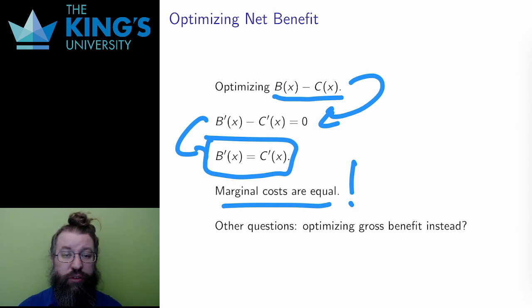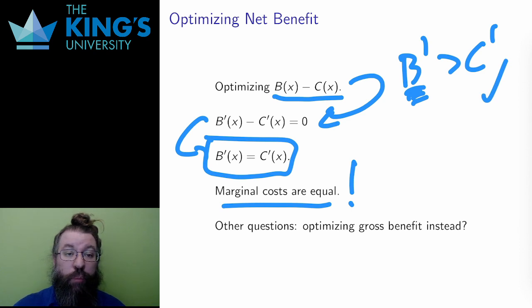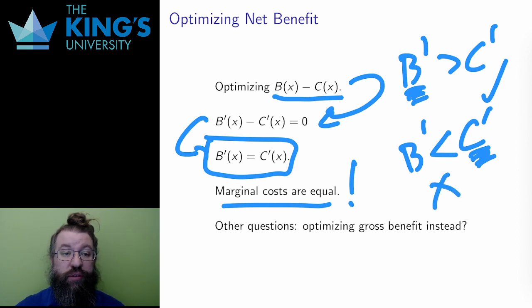So let me give some more interpretation here. If the marginal benefit is larger than the marginal cost, that means that the next unit will produce more benefit than cost. That's good, so production should increase. However, if the marginal benefit is less than the marginal cost, that means that the next unit will cost more to produce and give less benefit. That's not good, so production should decrease. And when the two are perfectly lined up, that's the critical value, the maximum or possibly minimum of the net benefit.